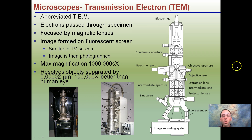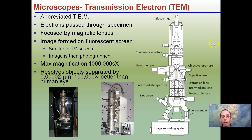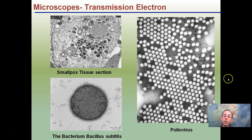Getting a little more unique — something you may not be familiar with — the Transmission Electron Microscope, the TEM. This allows electrons to pass through the specimen. Its maximum magnification is very strong, about 100,000 times better than the human eye. It's a very complex, very expensive piece of equipment with an electron gun that passes electrons through the specimen. It's typically used for very small items such as viruses — for example, what the polio virus looks like. This image was taken through a TEM.